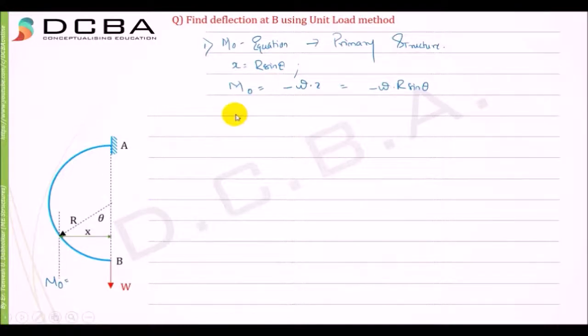So we found our M0 equation. Now we need to find the M1 equation. We remove all the loading and apply a unit load at the point where we require the deflection. This is the unit load structure. M1 equation will be equal to minus 1 into x, which is equal to minus r sine theta.